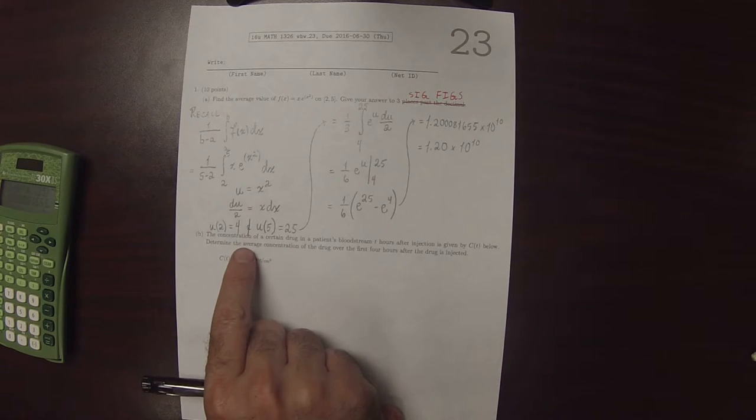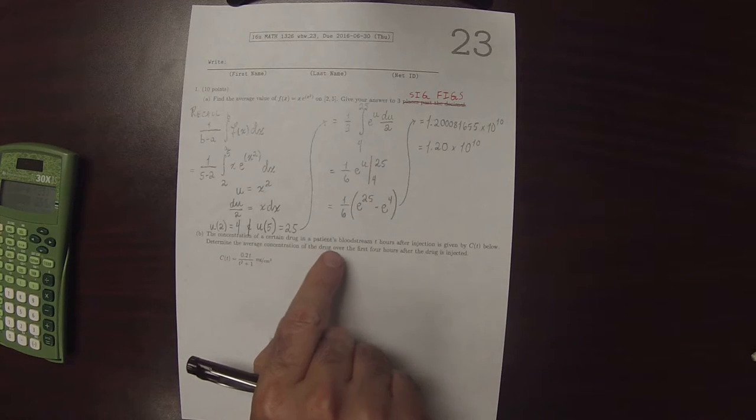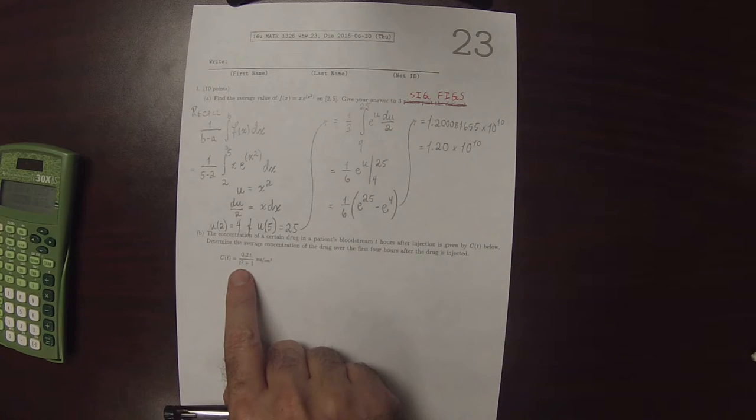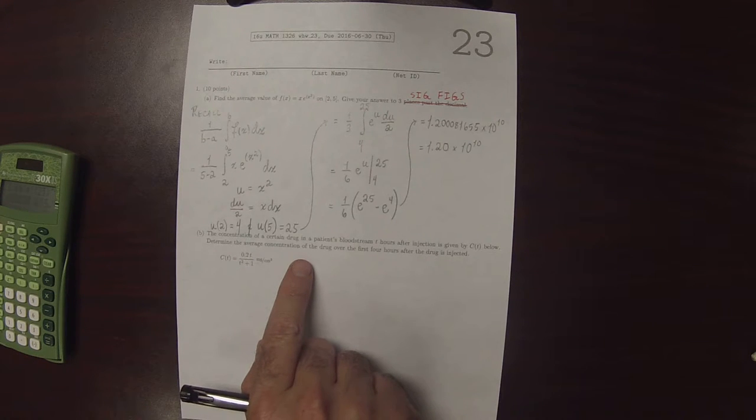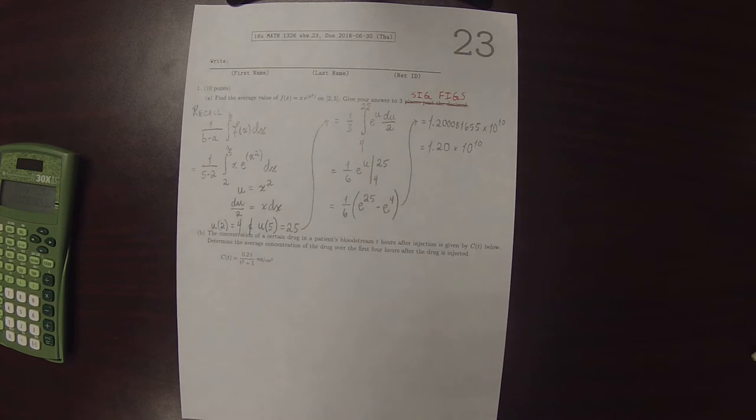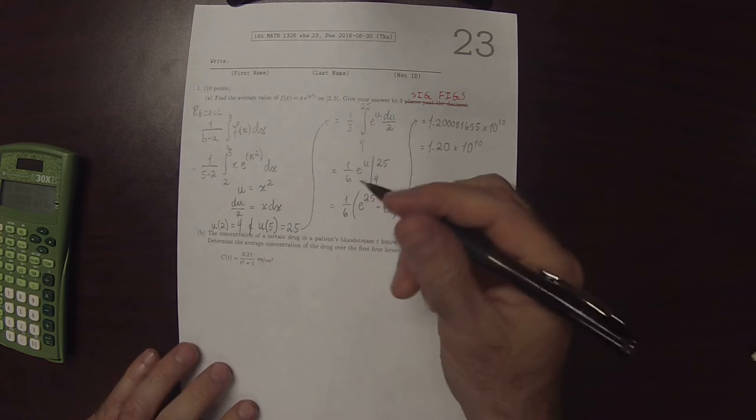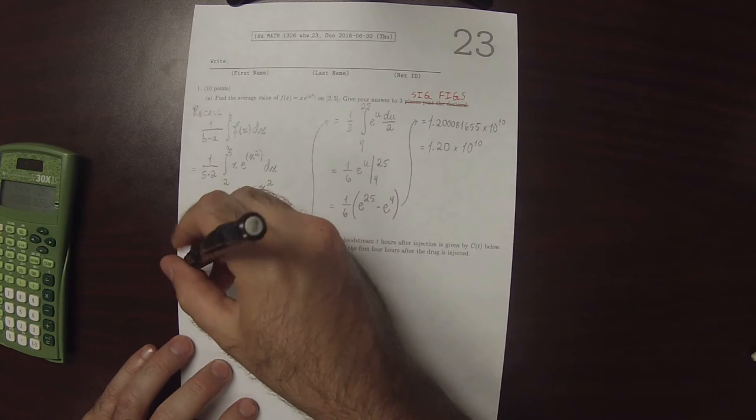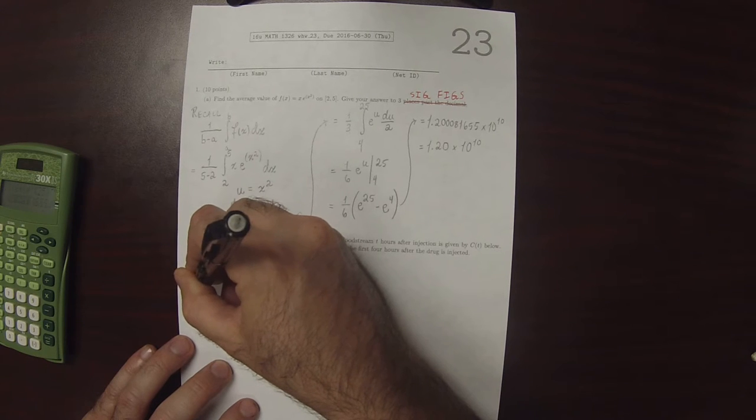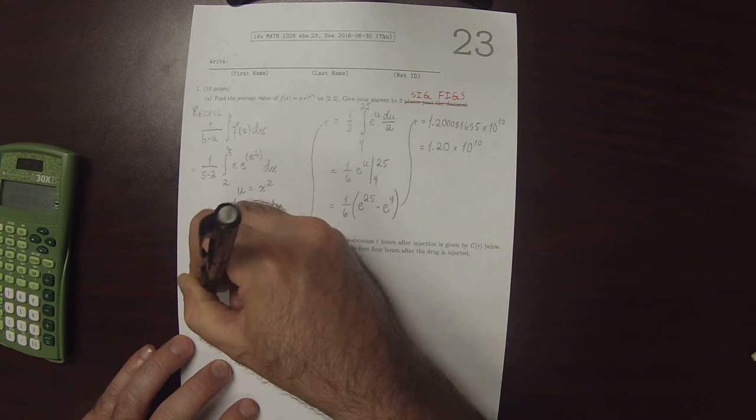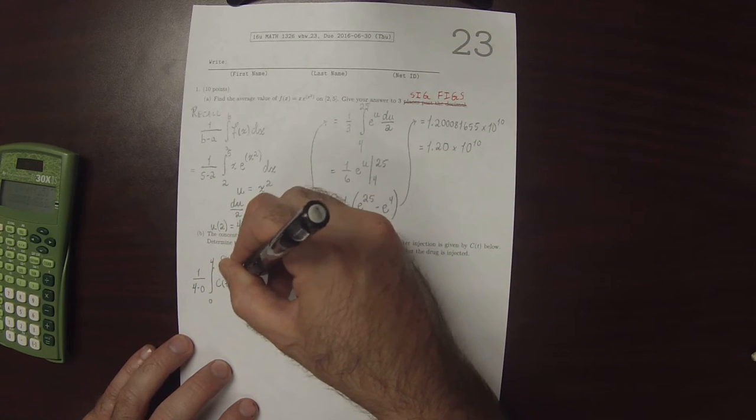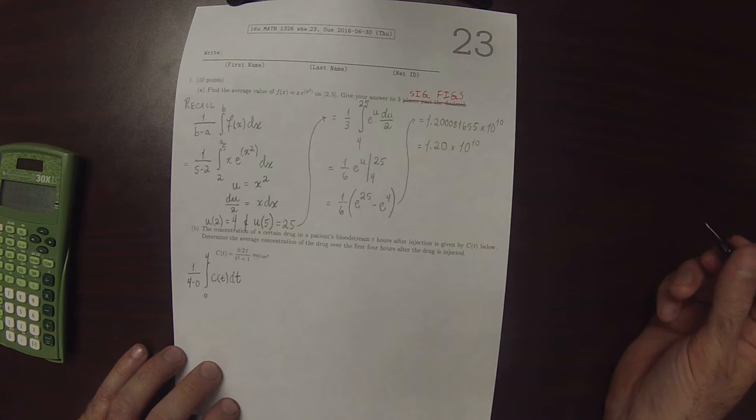Okay, so the concentration of a certain drug in a patient's bloodstream T hours after the injection is given by this function. Determine the average concentration of the drug over the first 4 hours after the drug is injected. So what's being requested is for us to evaluate 1 divided by 4 minus 0, integral 0 to 4, C of T, dT. This will give us the average concentration.